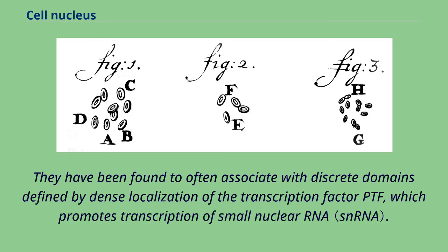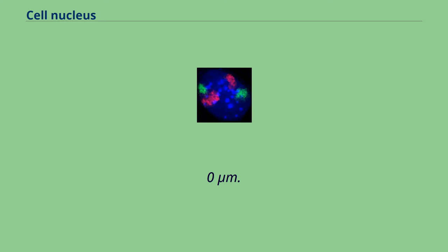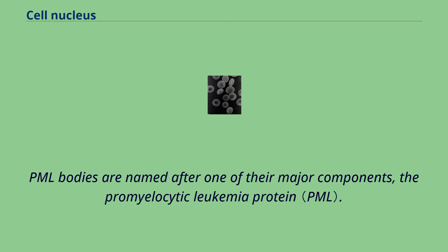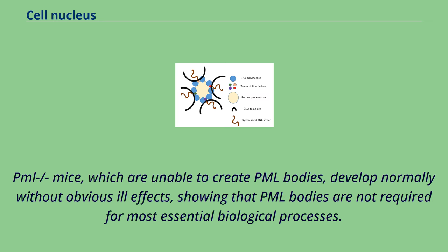Promyelocytic leukemia bodies, or PML bodies, are spherical bodies found scattered throughout the nucleoplasm, measuring around 0.1 to 1.0 micrometers. They are known by a number of other names, including nuclear domain 10, Kremer bodies, and PML oncogenic domains. PML bodies are named after one of their major components, the promyelocytic leukemia protein. They are often seen in the nucleus in association with Cajal bodies and cleavage bodies. PML-null mice, which are unable to create PML bodies, develop normally without obvious ill effects, showing that PML bodies are not required for most essential biological processes.